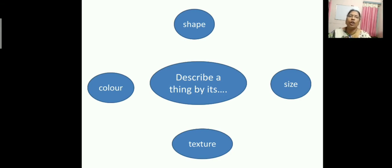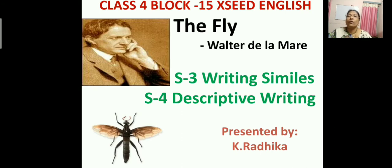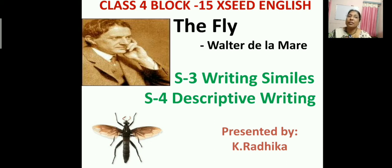Shape is rectangle or square. Color is red, yellow, blue like that. Size is whether it is huge or small. Texture is rough or smooth. Now in today's class, we are going to read Block 15 exceed English of Class 4, 'The Fly' which is written by Walter de la Mare. In this particular video, I am going to teach you how to write similes and also how to use these similes in a descriptive writing. When you use similes in a descriptive writing, the writing becomes very excellent and also interesting.